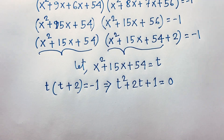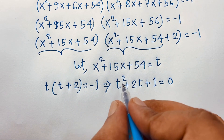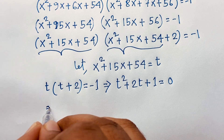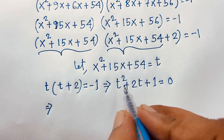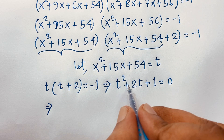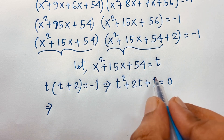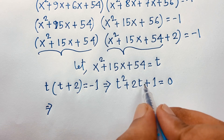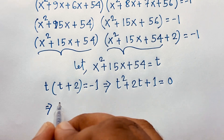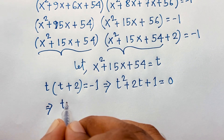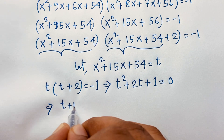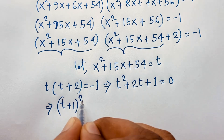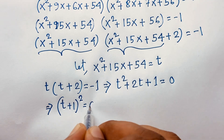We recognize this as a perfect square: a² + 2ab + b² = (a + b)². So t² + 2t + 1 = (t + 1)² = 0, which gives us t + 1 = 0.